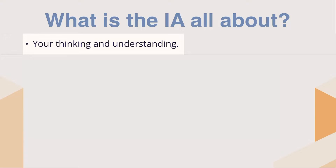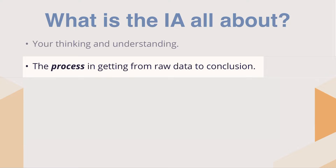What the IA is all about is your thinking and understanding — that is the most important thing. This is about documenting your thinking process and your understanding of the mathematics you're using. It's about the process of getting from the raw data to the conclusion. It's rarely about the answer. You may think you're going to prove something, but we're just scratching the surface of what you can do with statistics. It's not about showing that you're right; it's about showing how you adapt and modify as you go through the process of analyzing data.